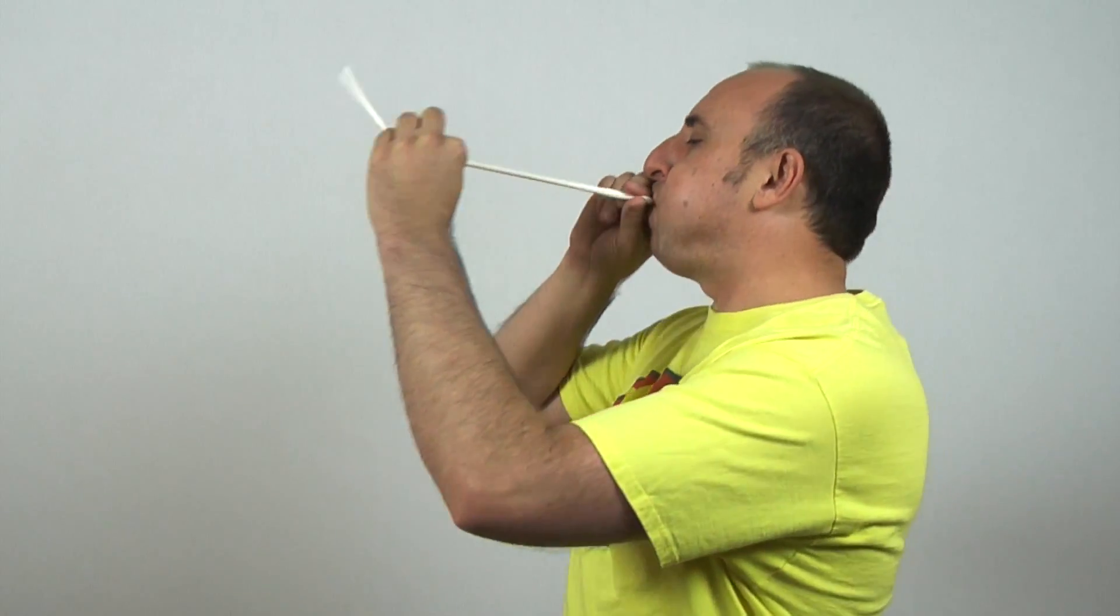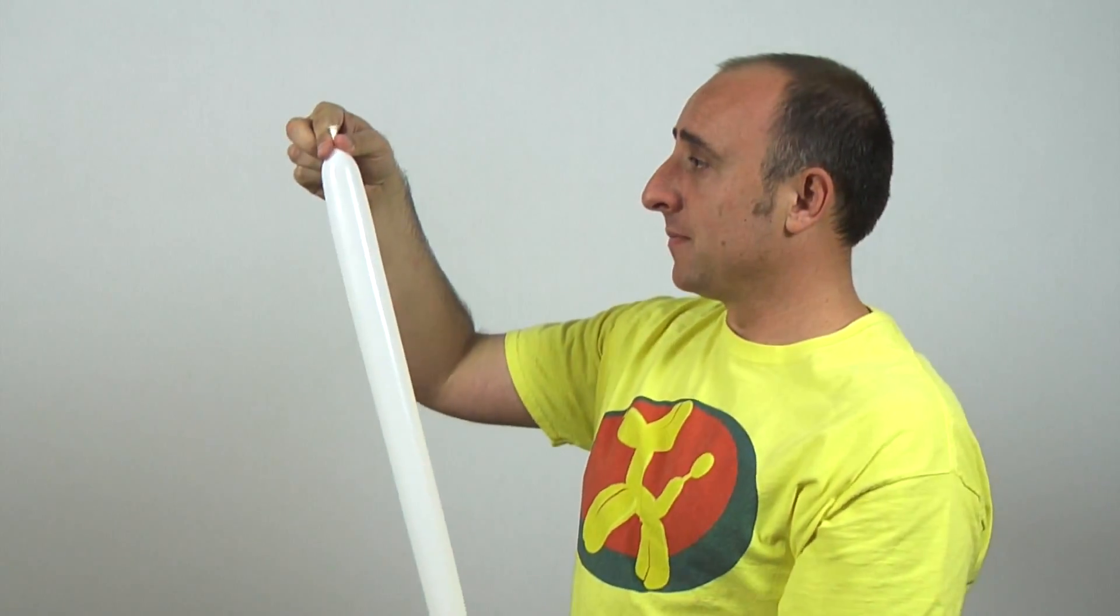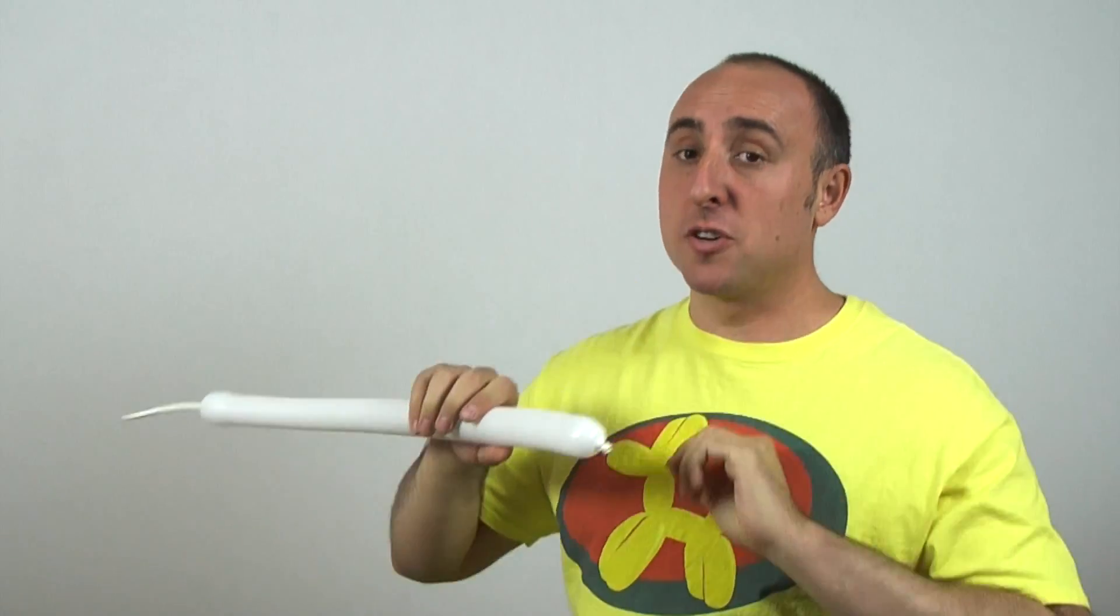We're going to start with our flower bracelet. Get your 260 and inflate it about halfway. Put some air out and tie. Give it a nice stretch and a squeeze to make sure it's soft.